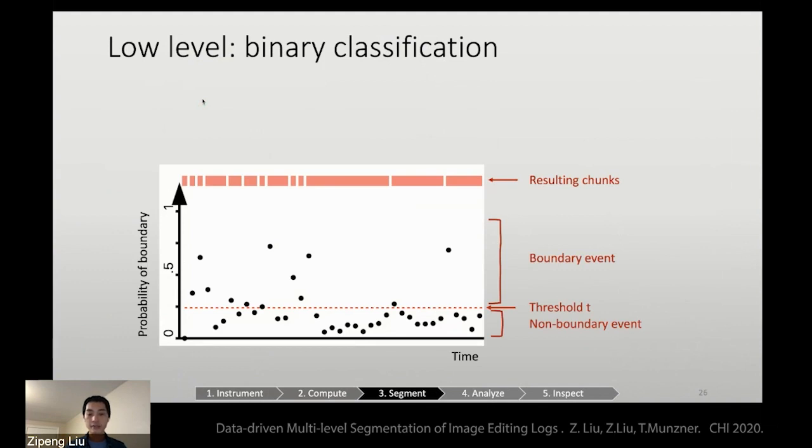So after the training, we can plot the data on this chart, where x-axis is time, meaning the dots. Each dot is an event. It lays out on the screen from left to right according to time. And the y-axis is the probability of boundary. And then we can draw a threshold, meaning the dotted vertical line, such that the dots, the events above this line, are categorized as boundary events, while the dots below this line are non-boundary events.